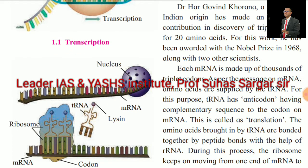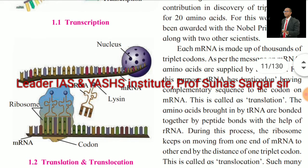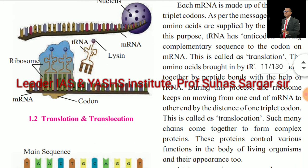For this work, he was awarded the Nobel Prize in 1968 along with two other scientists. Each mRNA is made up of thousands of triplet codons. As per the message on mRNA, amino acids are supplied by tRNA. The tRNA has an anticodon with a complementary sequence to the codon on mRNA. This is called translation. Amino acids brought in by tRNA are bonded together by peptide bonds with the help of rRNA. The ribosome moves from one end of mRNA to the other by the distance of one triplet codon. This is called translocation. Many such chains come together to form complex proteins that control various functions and the appearance of the living organism.